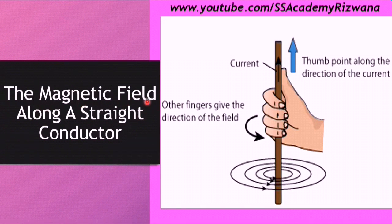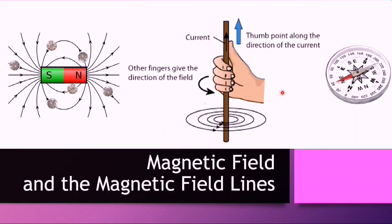Today we will study the magnetic field along a straight conductor. Before starting this topic, I would like to discuss a little bit about magnetic fields and magnetic field lines. A magnetic field can be generated in two ways: using a permanent magnet or using an electric current. Magnetic field patterns are represented by drawing magnetic field lines.